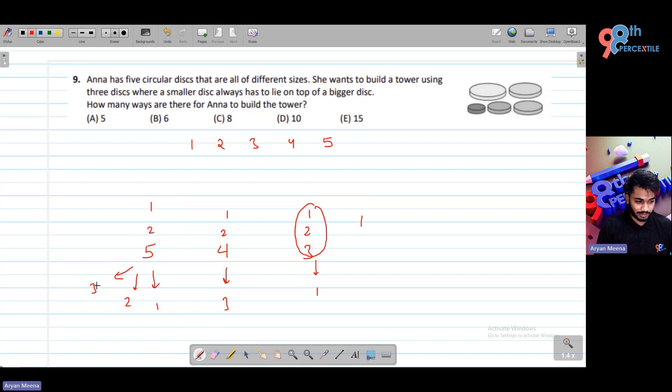In total, how many ways are there? 3 plus 2 is 5, plus 1 is 6, plus 3 is 9, plus 1 is 10. So the correct answer is option D.